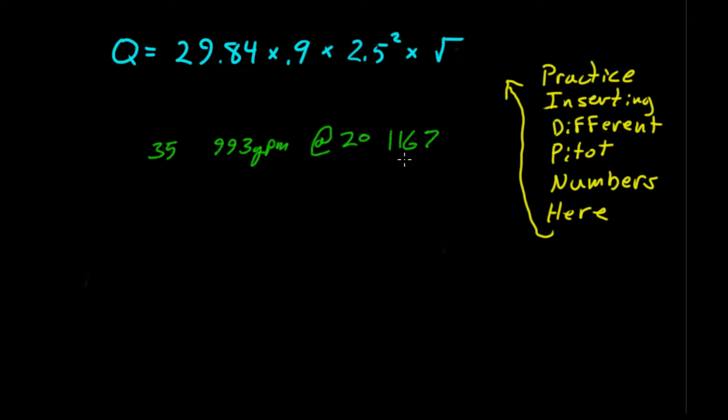And if we decided that we wanted to do one more, if you want 45 on the pitot, you should get an answer of approximately 1,126. And then your theoretical flow would be 1,323 gallons a minute.